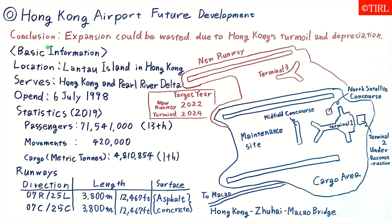Next, I'd like to check the basic information of this airport. The location is Lantau Island in Hong Kong. The service area is Hong Kong and the Pearl River Delta. The opening date is 6th July 1998.